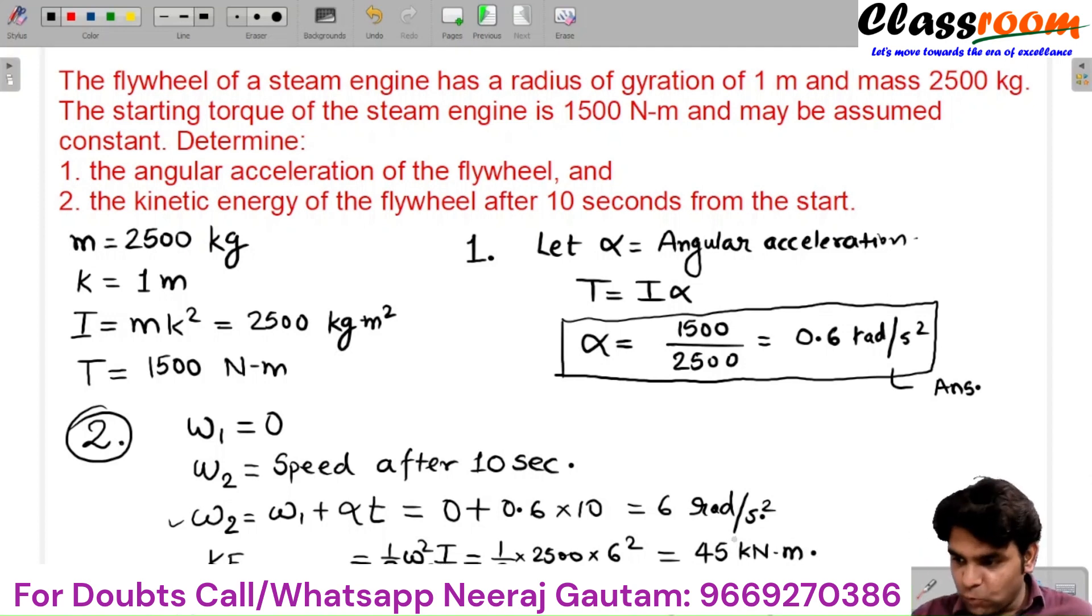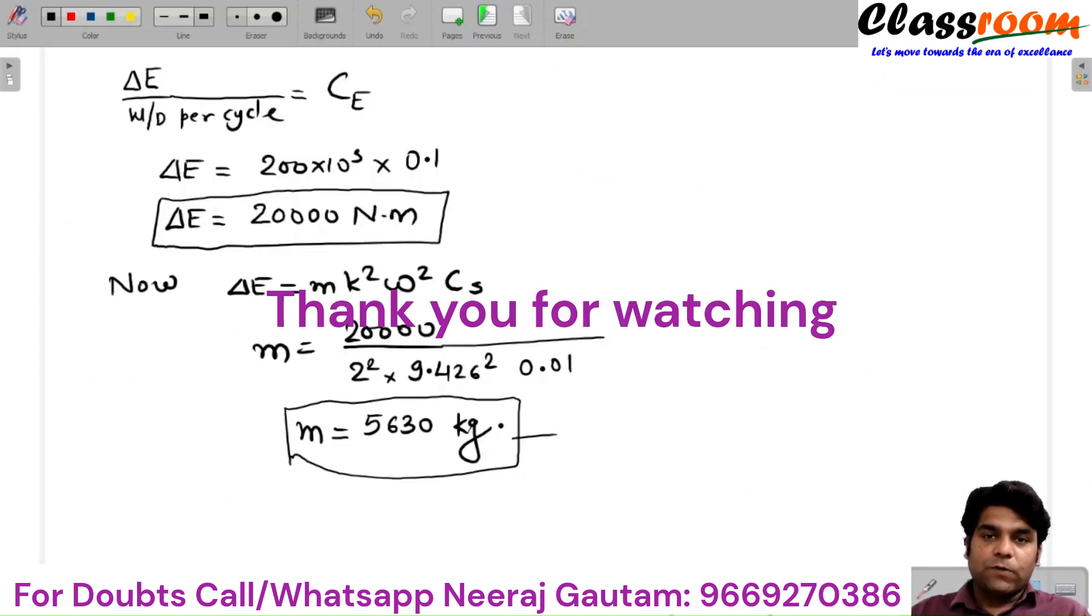45 kilojoules of energy is available after 10 seconds at the flywheel. This is a simple example based on the flywheel. If you have any doubt or query related to this class or any topic of theory of machines, send your doubts or queries to the mail IDs or numbers given below. Thank you.